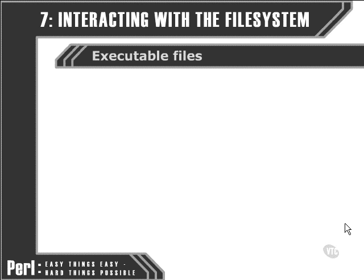Other files are executable, and this means they can be run as programs, whether they're in binary format and can be run directly from the operating system, or whether they require an interpreter such as a Perl script or any other kind of shell script. These executable files can be accessed from the command line or from within a graphical user interface such as the Windows operating system or X Windows on Linux-based operating systems. But we can also run programs from within our Perl scripts.